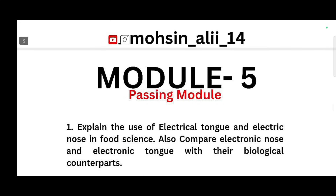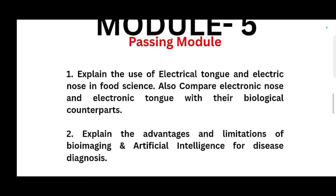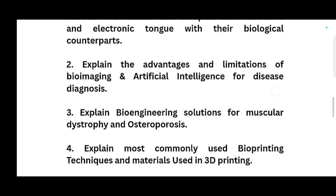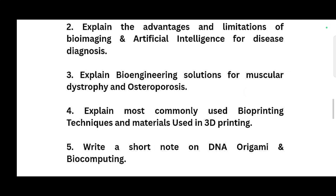Moving to Module 5, also a passing module. Super important questions: expand on the use of electrical tongue and electrical nose in food science, and compare electronic nose and electronic tongue with their biological counterparts; expand the advantages and limitations of bioimaging and artificial intelligence for disease diagnosis; expand bioengineering solutions for muscular dystrophy and osteoporosis.